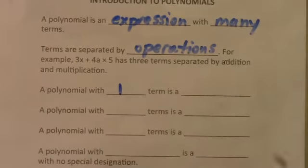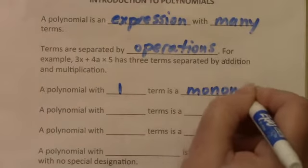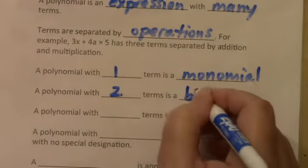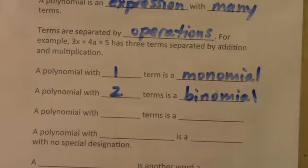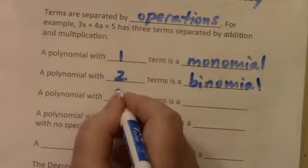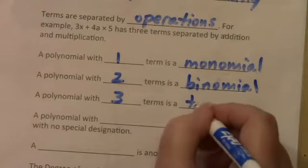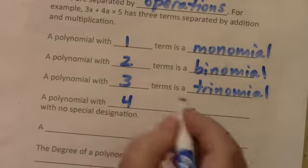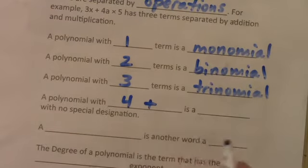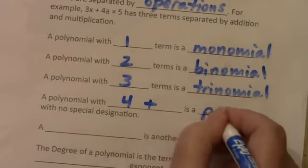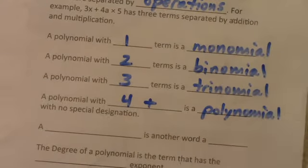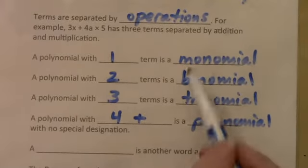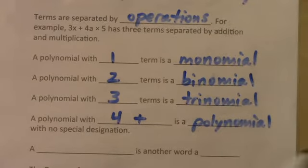A polynomial with one term is a monomial. A polynomial with two terms is a binomial. A polynomial with three terms, you could probably guess this, is a trinomial. A polynomial with four or more terms is a polynomial with no special designation. So we only identify monomial, binomial, and trinomials, and then they're all just polynomials.